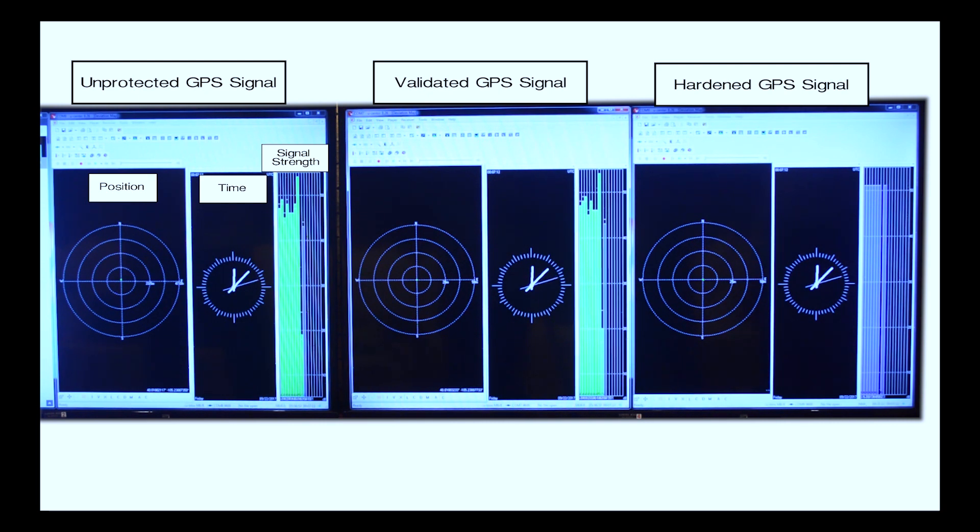The next console is the output that is the validated output from the blue sky GPS firewall. Here again, we're seeing position, time, and the strength of the satellites being received.